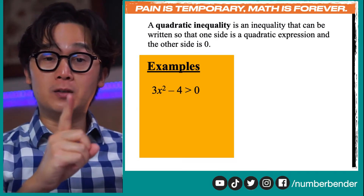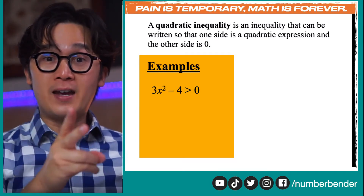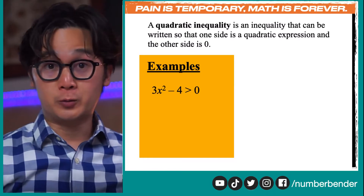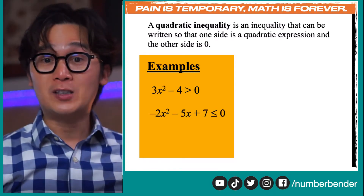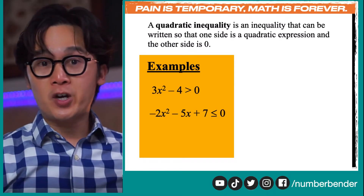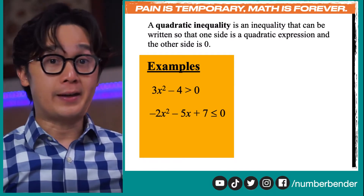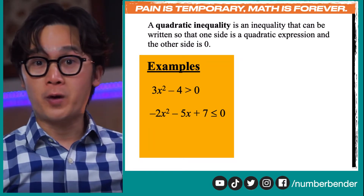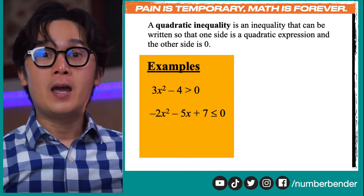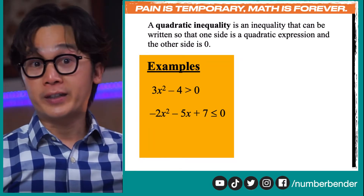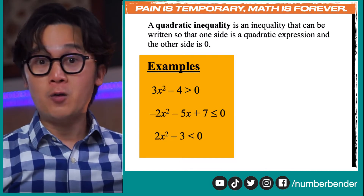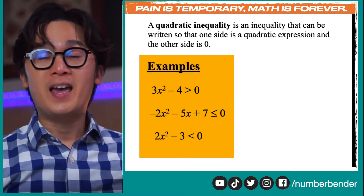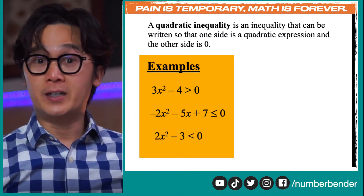There are four different inequality symbols: greater than, less than, less than or equal to, and greater than or equal to. Other examples of quadratic inequalities include negative 2x squared minus 5x plus 7 less than or equal to 0, and 2x squared minus 3 less than 0.